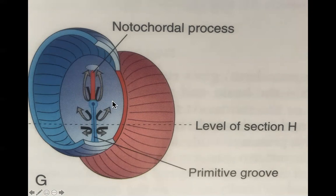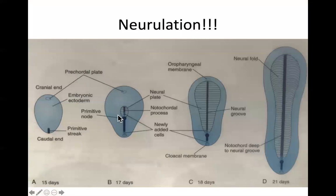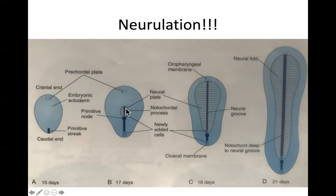As the notochord develops, it stimulates the ectoderm directly above it to thicken into what's called the neural plate. This process is called neurulation. The neural plate is eventually going to give rise to the central nervous system and almost every part of the nervous system. It's important to know that the notochord is the primary inducer of neurulation — that is, the primary inducer of the formation of the neural plate, which is eventually going to become the nervous system.